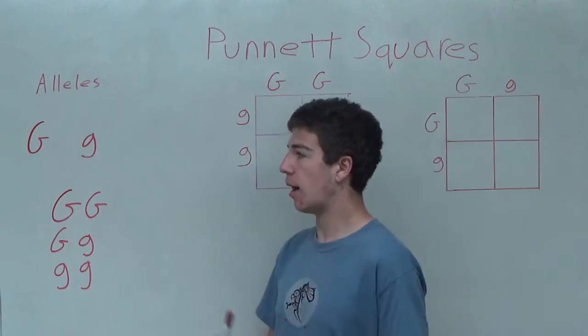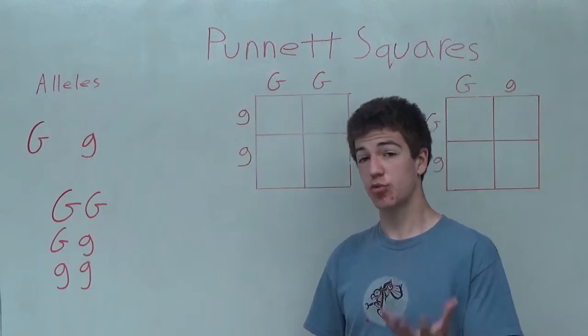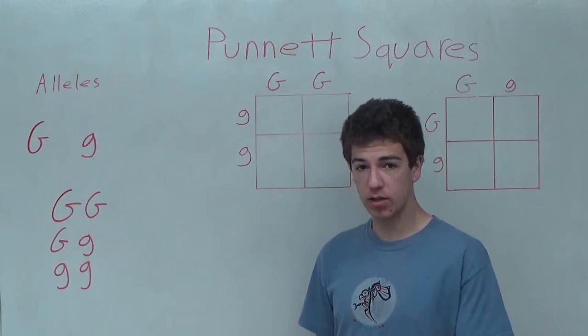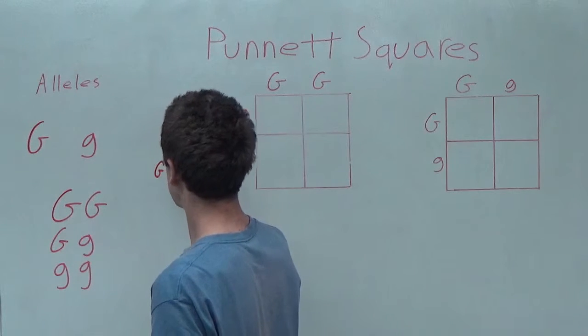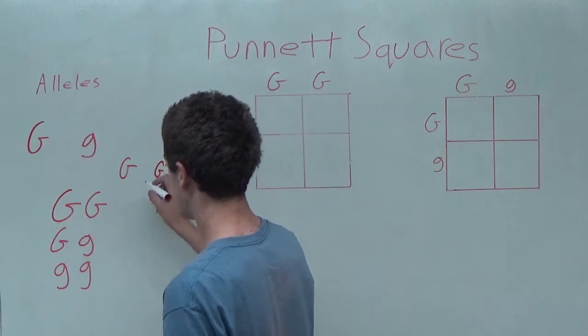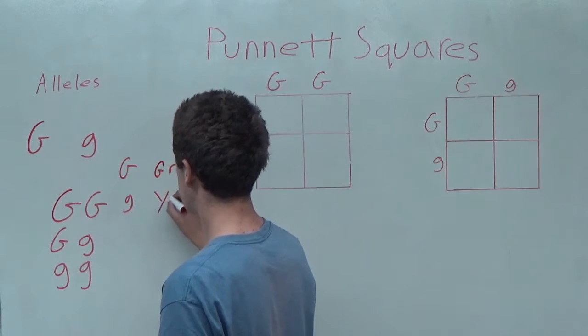We're going to be talking about pea plants and whether or not it shows as green or yellow. The green trait is a dominant trait. So green will be dominant, represented by the big G, and the little g will represent yellow.